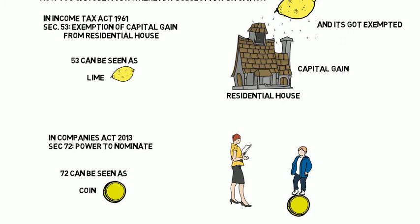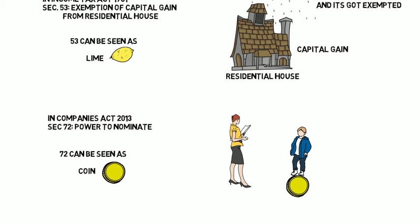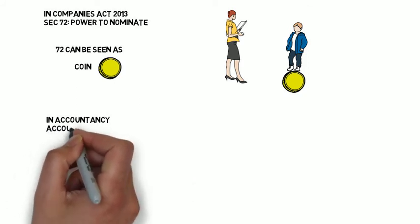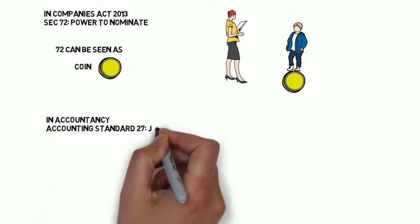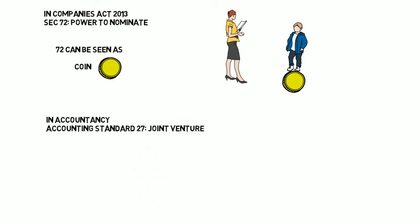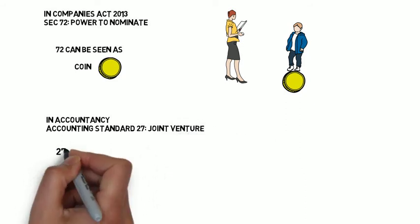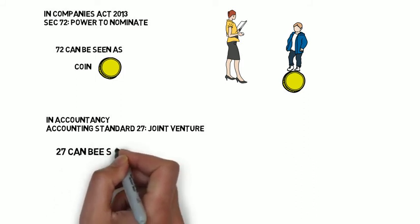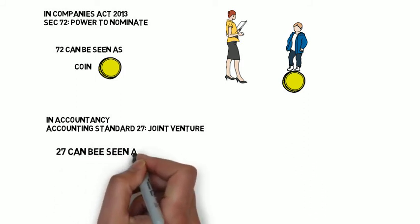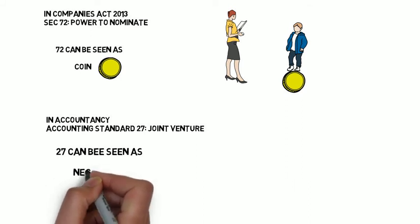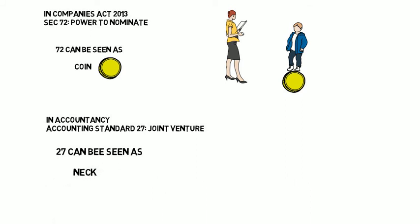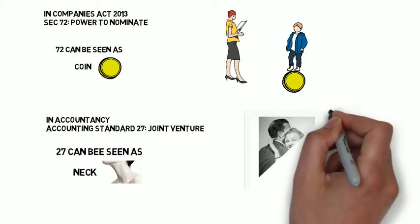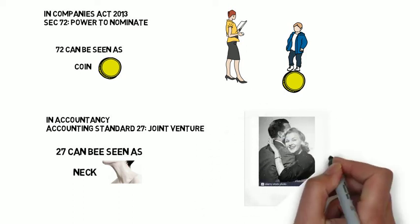Another example in Accountancy: Accounting Standard 27 is about joint ventures. 27 → 2 is N, 7 is K → N-K → 'neck'. Visualize: people clasp each other by the neck when they get into a joint venture together. It's very simple — just link the number code with the content you want to remember.